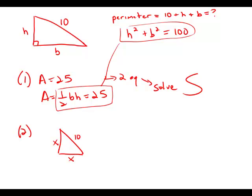Let's call them both x. Well then we know that x squared plus x squared equals 100. 2x squared equals 100. x squared equals 50. So we could find x from that.